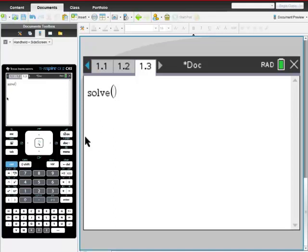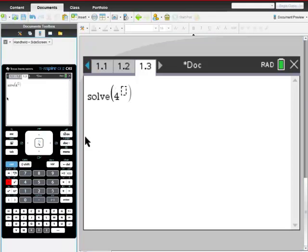So I'm going to actually solve this one. It's 4 to the 3x power, so 4 to the 3x power.